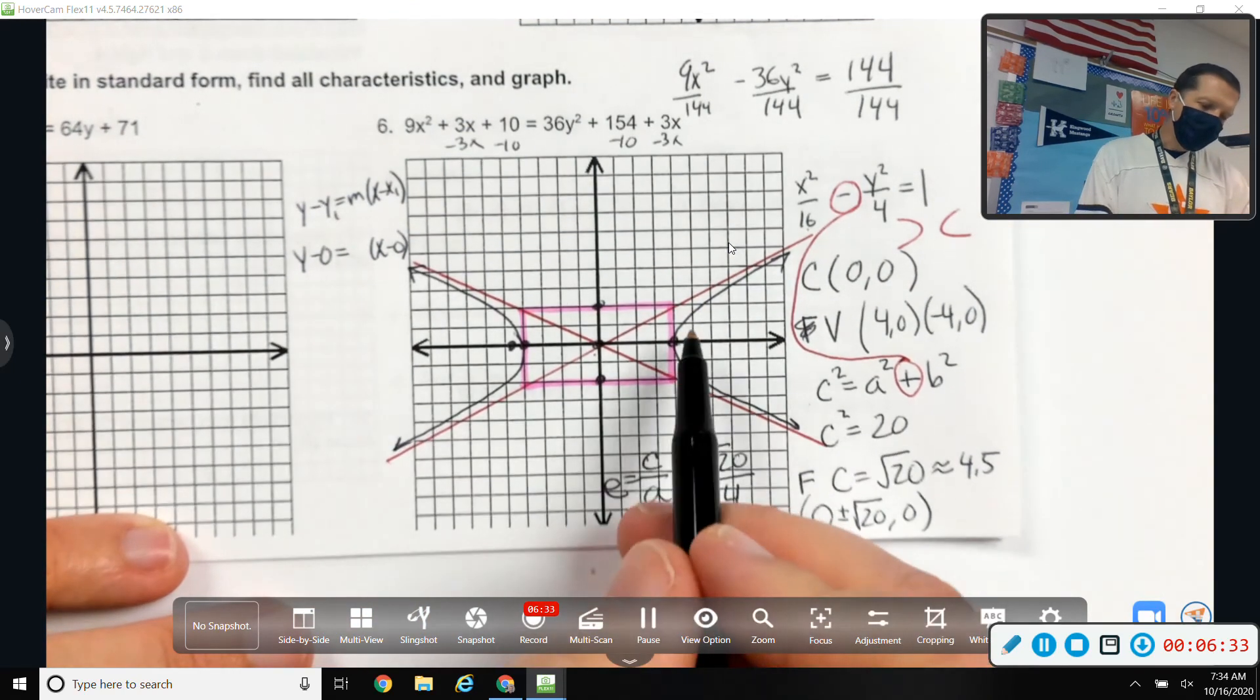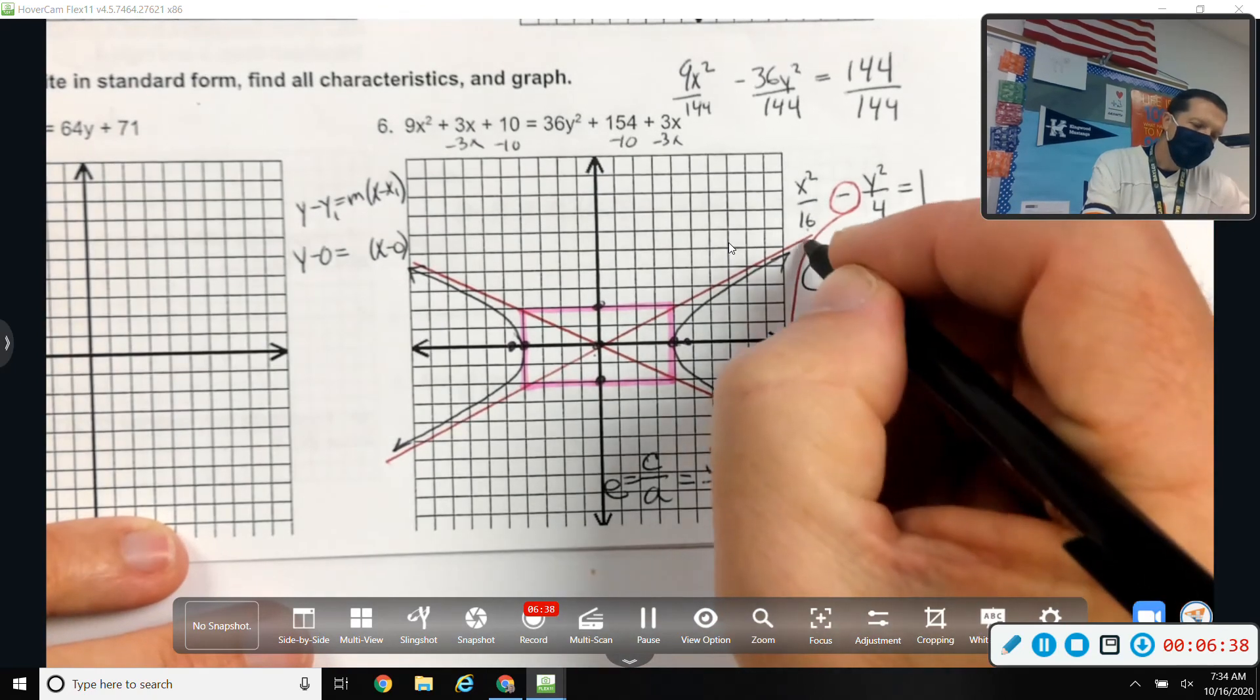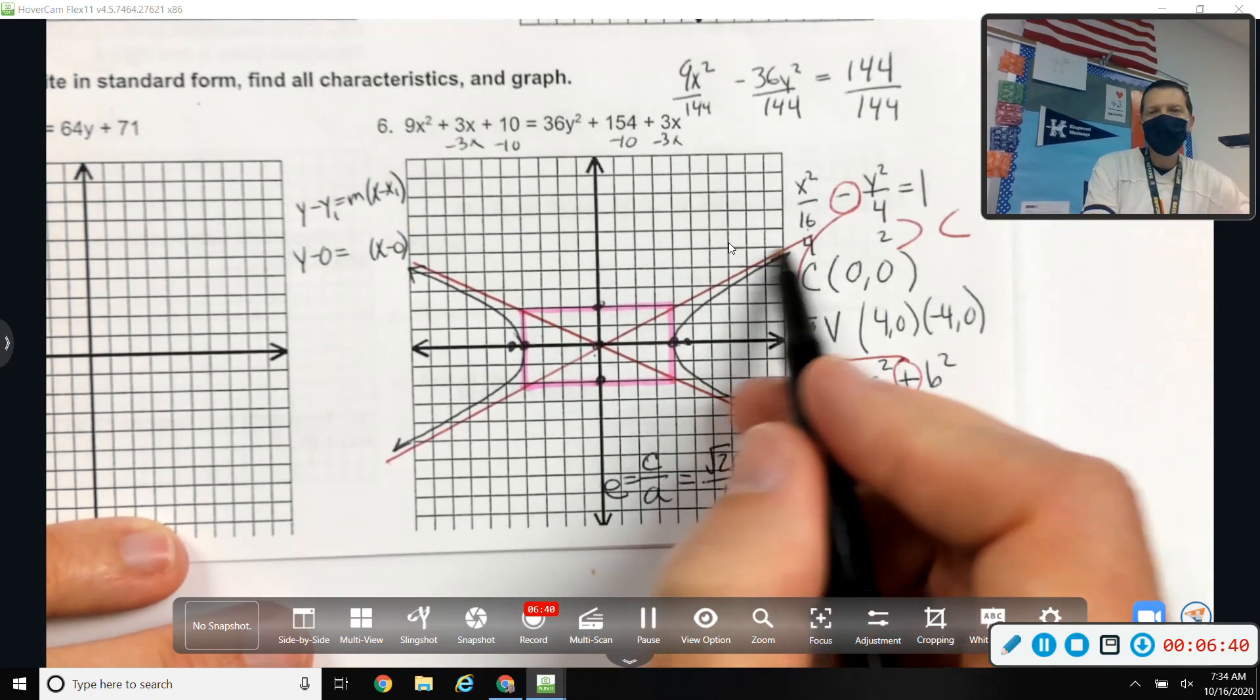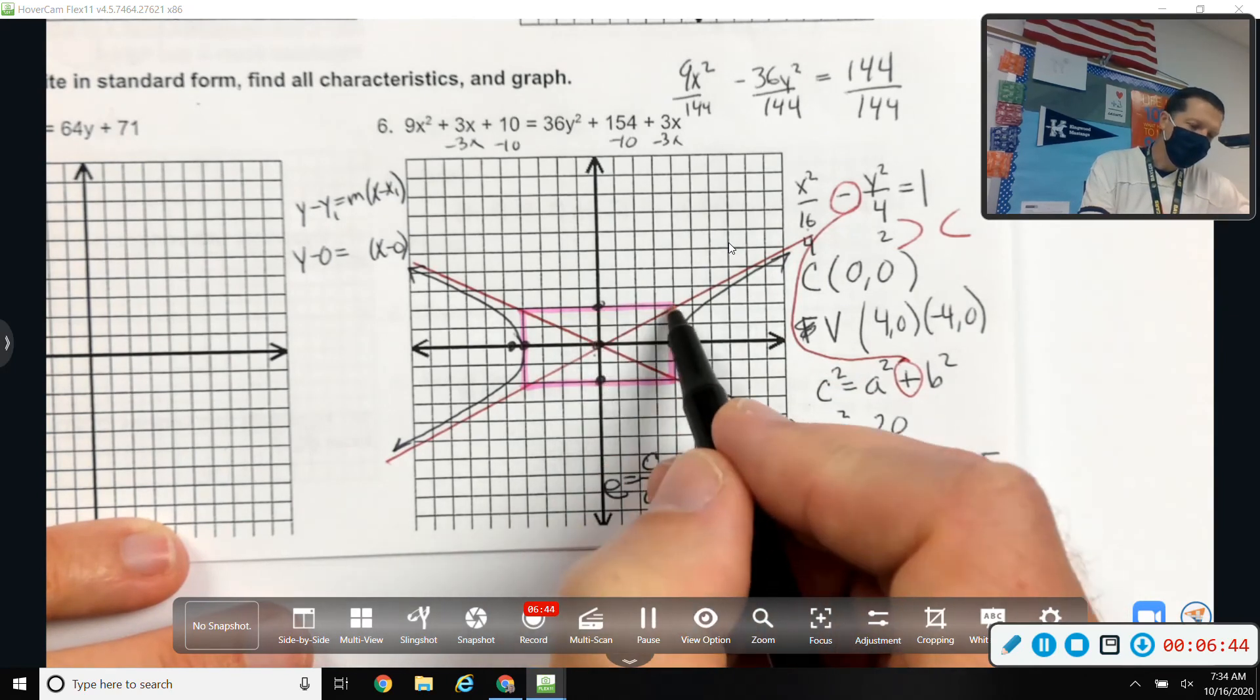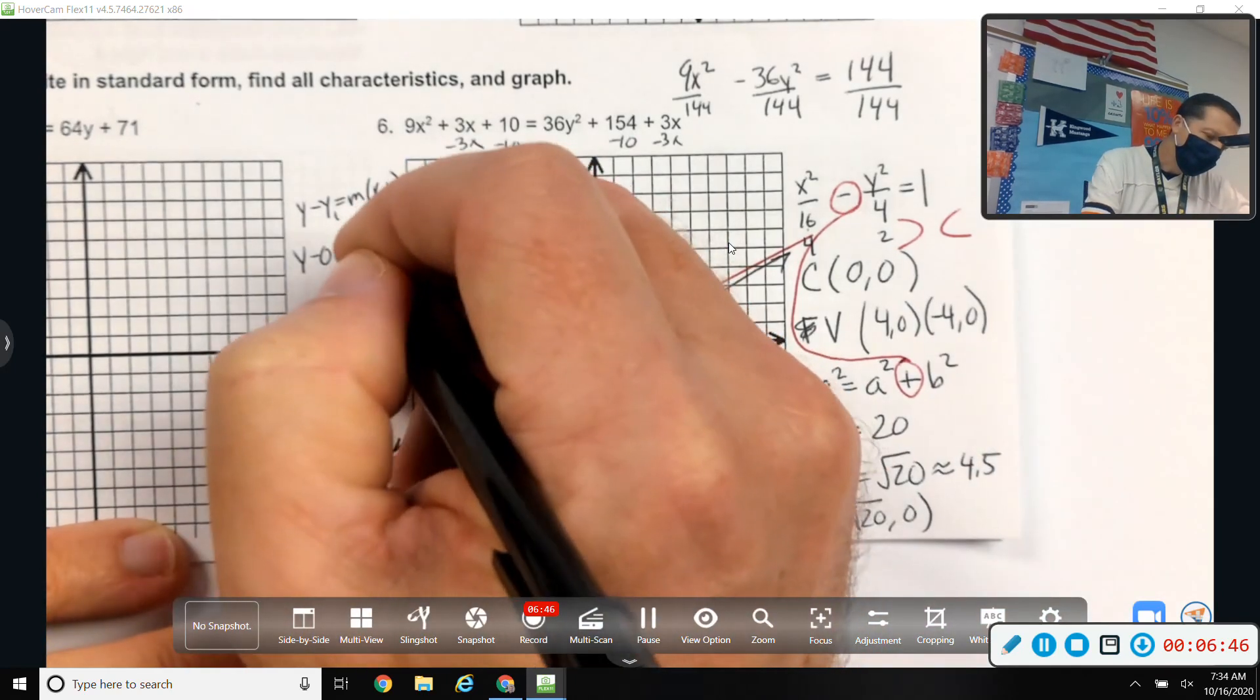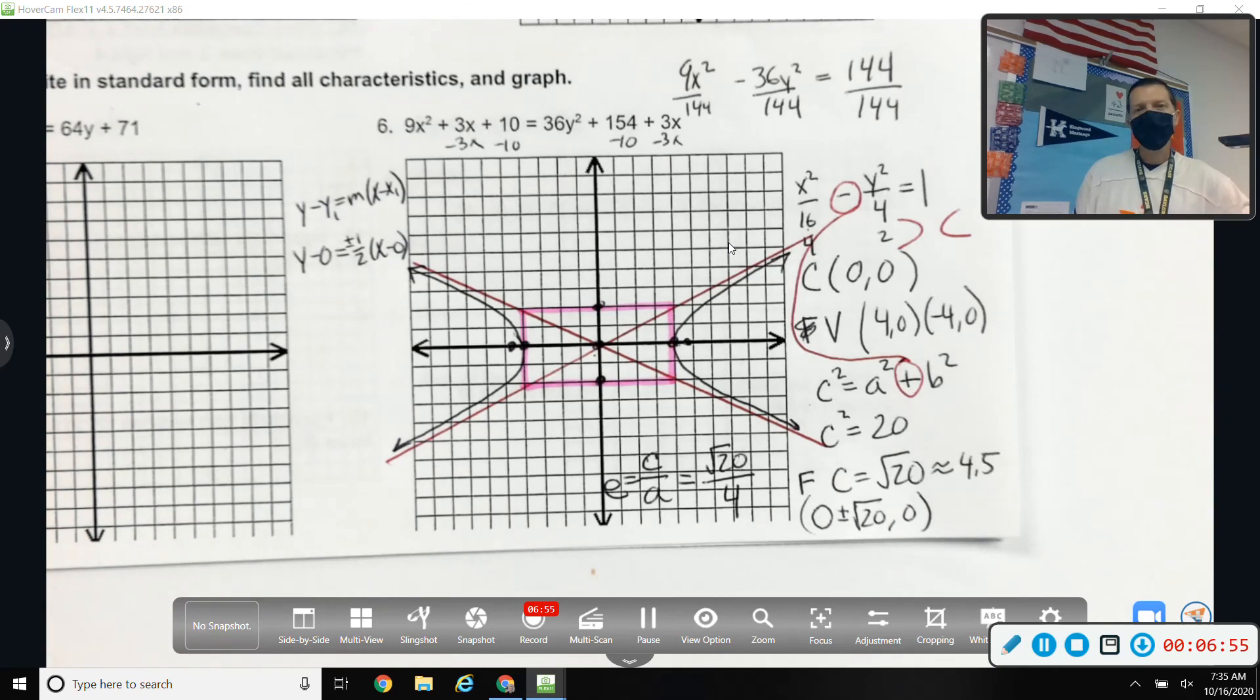And the slope is Y over X. So, I can do 2 over 4 from the equation. Or, I can look at the picture and see that it's up 2 over 4. Either way, plus or minus 1 half for the slope. Don't forget the plus or minus because that's what gives you both asymptotes.